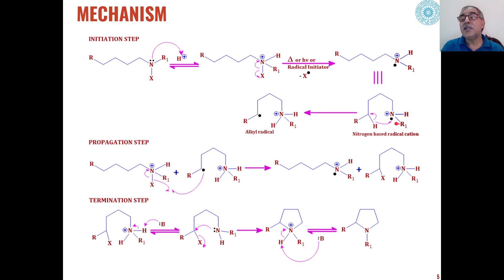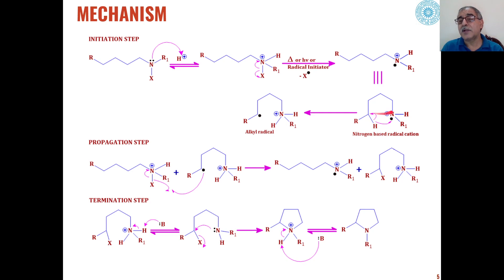This nitrogen-based radical cation abstracts H radical from the delta carbon atom. The carbon chain is labeled alpha, beta, gamma, and delta carbon, so this delta hydrogen in the form of H radical is shifted to nitrogen.